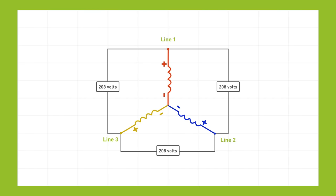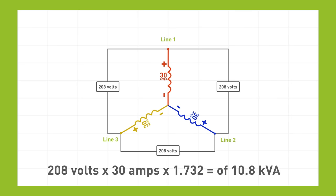If the wire is capable of delivering 30 amps, then the power that's being delivered is 208 volts times 30 amps times 1.732 for total power available of 10.8 kilovolt amps.